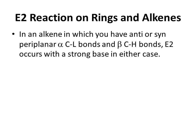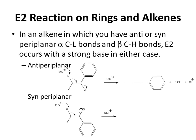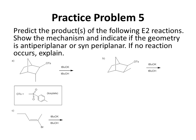In an alkene in which you have either anti- or syn-paraplanar alpha-carbon to leaving group bonds and beta-carbon to hydrogen bonds, E2 occurs with a strong base in either case. Practice Problem 5: Predict the product or products of the following E2 reactions. Show the mechanism, and indicate if the geometry is anti-paraplanar or syn-paraplanar. If no reaction occurs, explain. Pause the video to work on the problem.